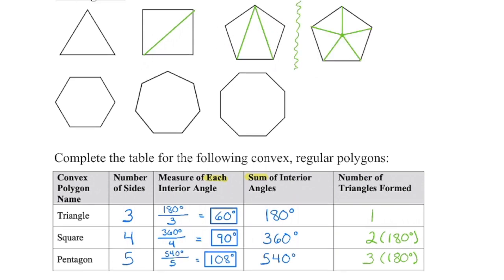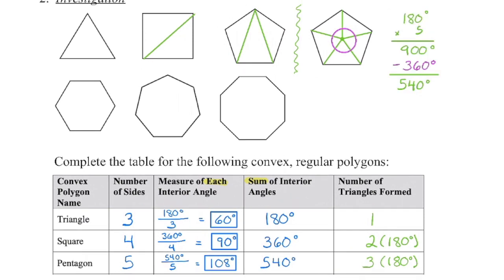Some people wonder why we can't break a pentagon into five triangles instead of three. When drawn from a vertex, the three triangles include all the angle measures of the pentagon. If we use five triangles from a center point, we need to account for pairs of angles at each corner, but the third angle in each of those triangles — the center angle — is not part of the pentagon's angles. So we'd take five triangles times 180, then subtract the 360 degrees from those five center angles to get the correct total.